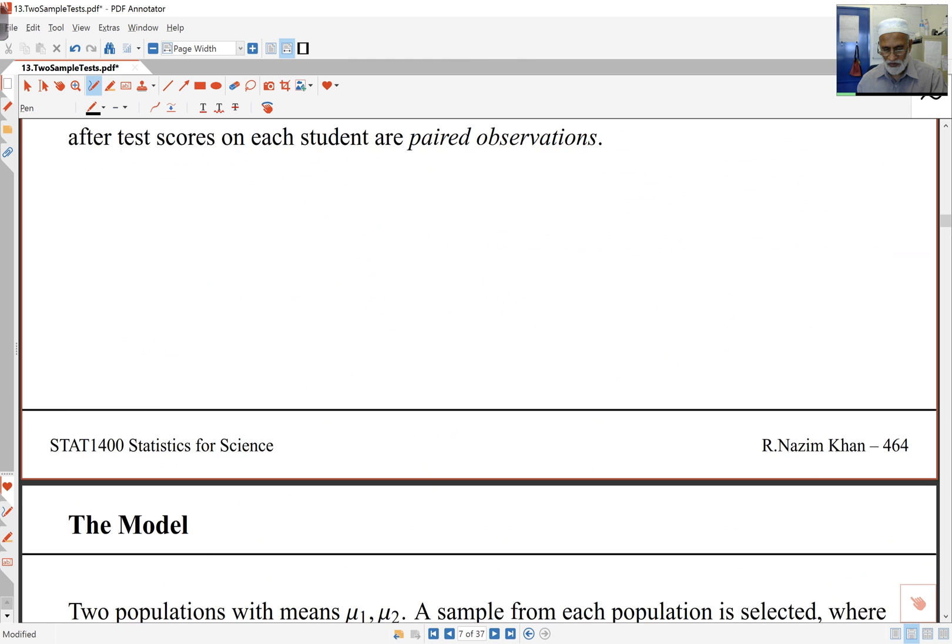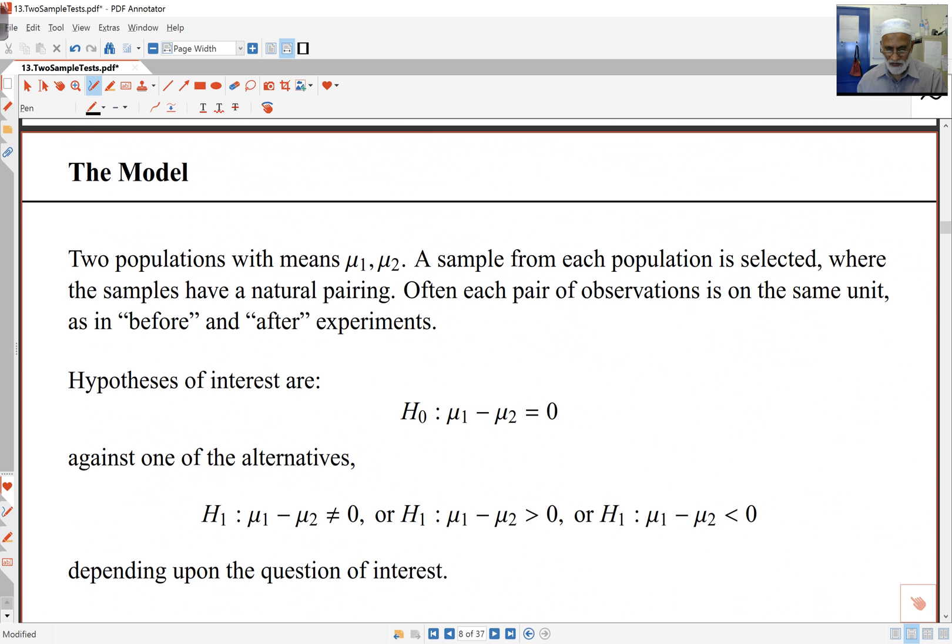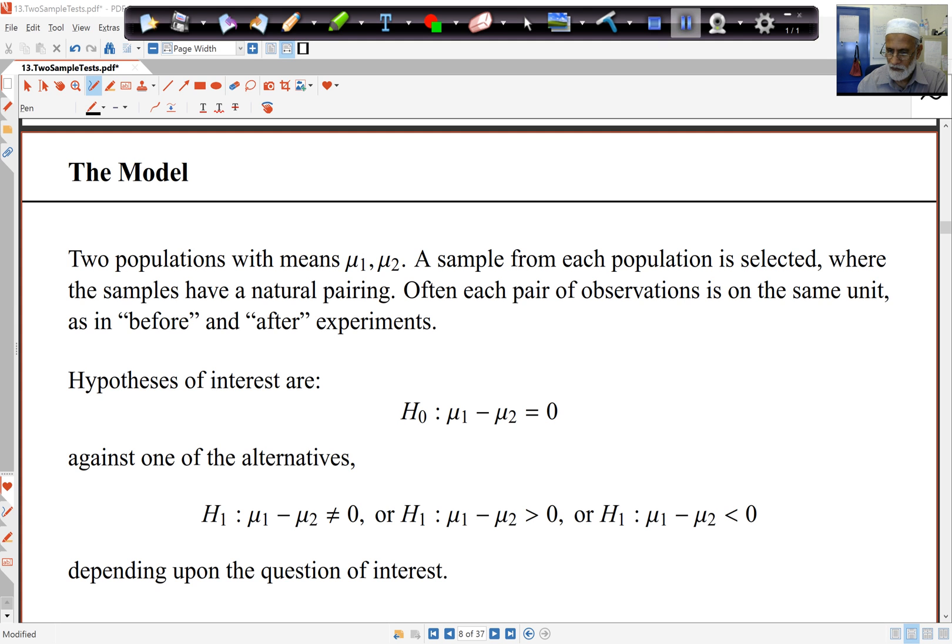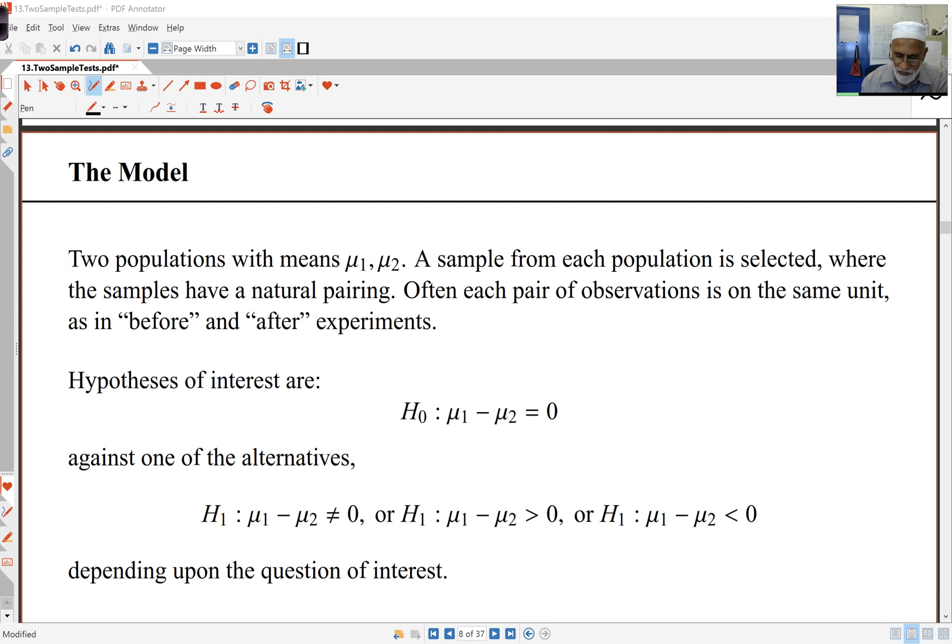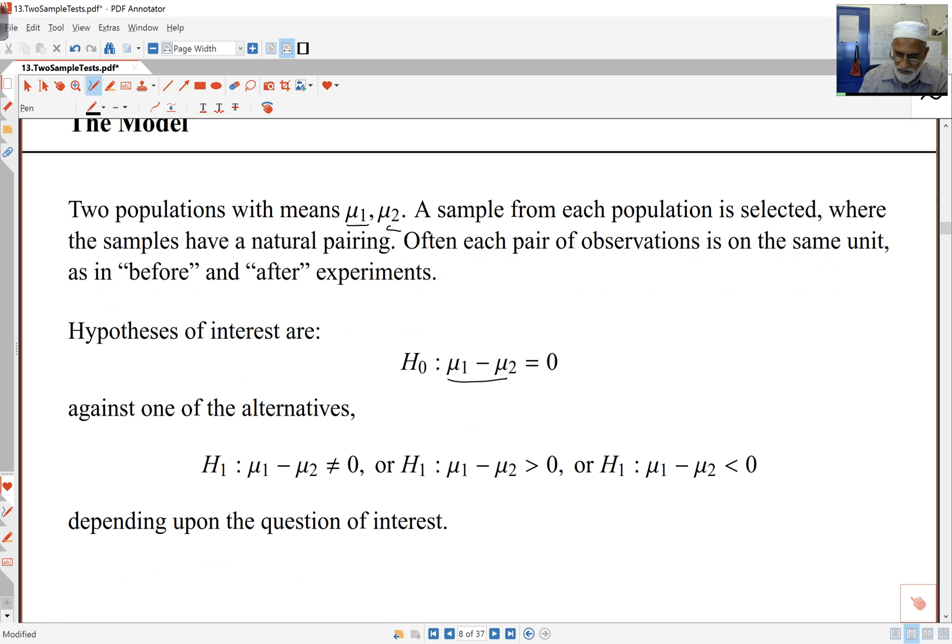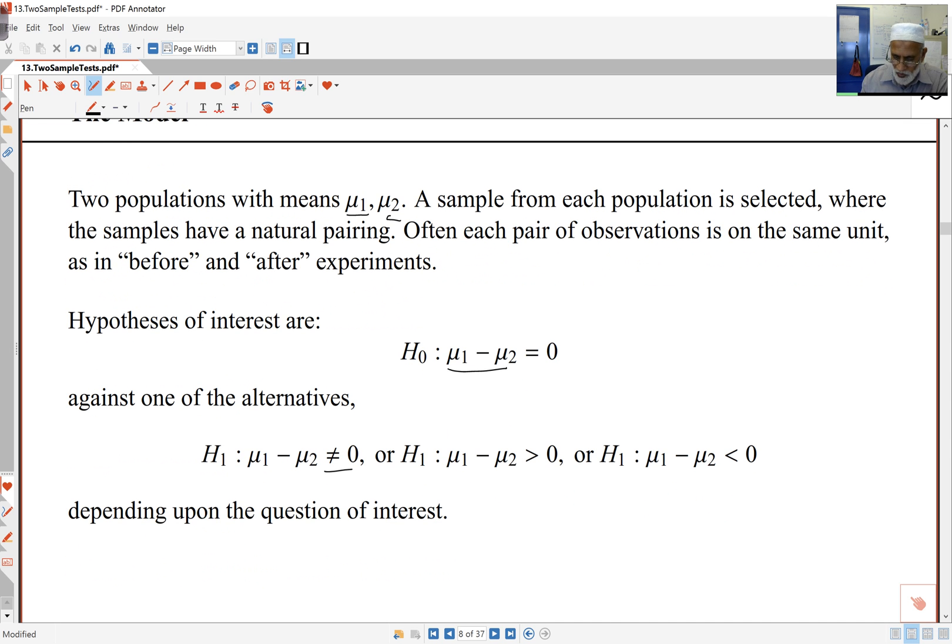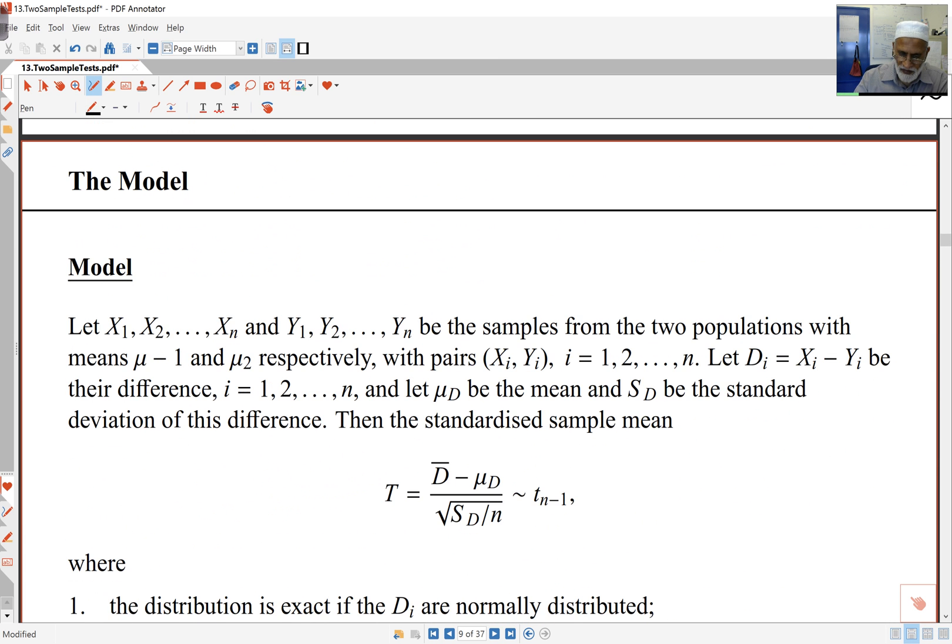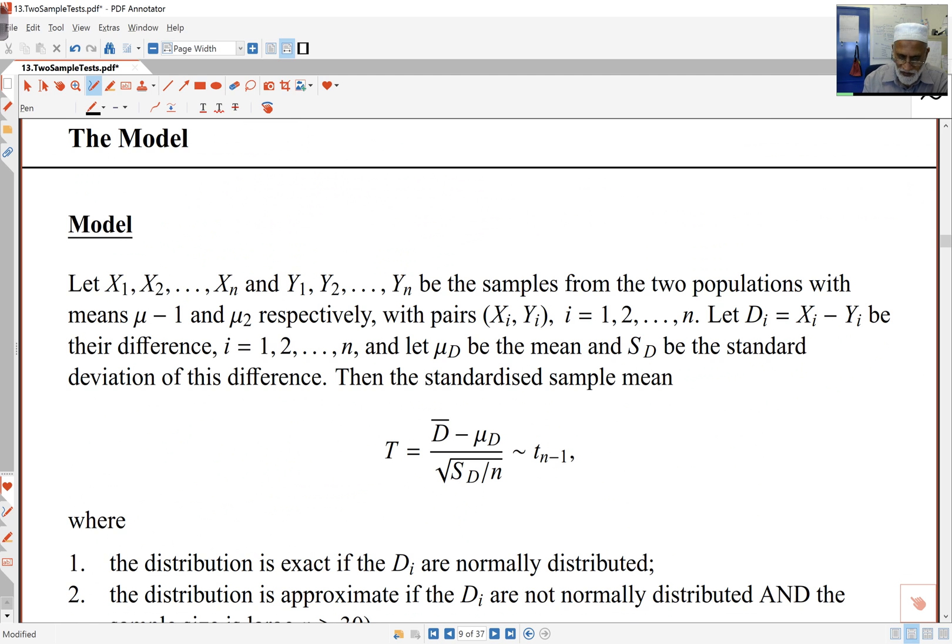Here's another example you can look at yourself. The model here is going to be that I've got two population means. So I've got two populations, and I've got two population means here, mu1 and mu2. And the interest really is to see if the means are the same, or they aren't the same. In other words, there are some differences. Either they're not equal to each other, or one's bigger than the other one. And those are the hypotheses, possible hypotheses, for alternative hypotheses, depending on the question of interest.